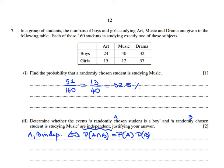Let's start with P(A and B): a randomly chosen student is a boy and is studying music. Here are boys that are studying music, so this probability is 40 out of 160. Now for P(A), a randomly chosen student is a boy: that would be 20 plus 40 plus 32 out of 160.